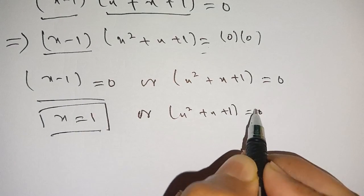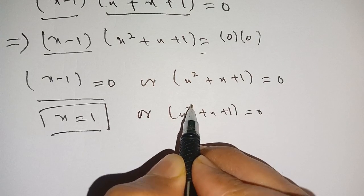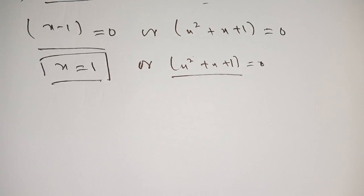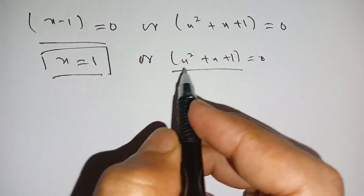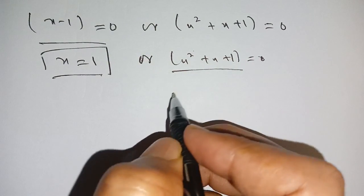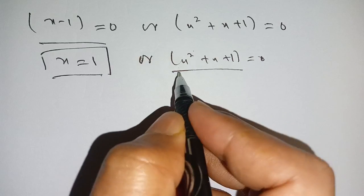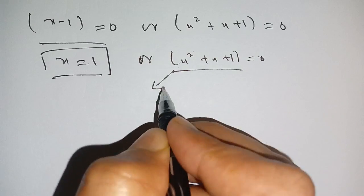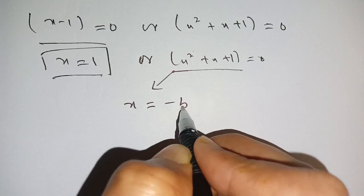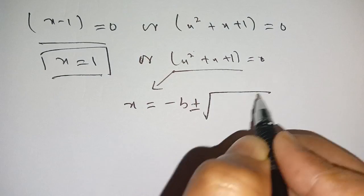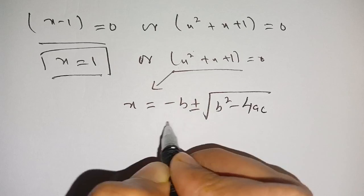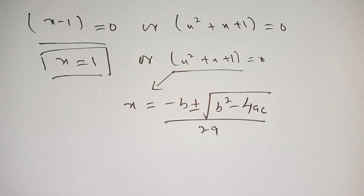The equation x squared plus x plus one equals zero has largest degree two, meaning it is a quadratic equation. In order to solve this, we use the quadratic formula: x equals minus b plus or minus square root of b squared minus four ac, divided by two a.